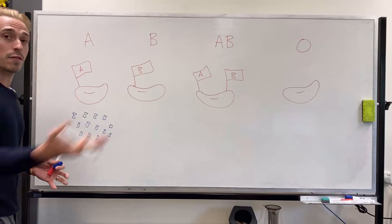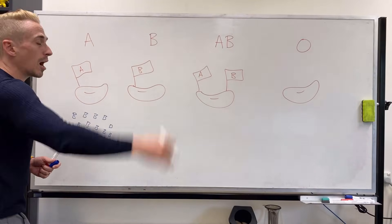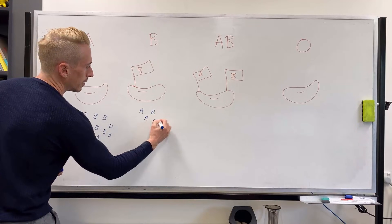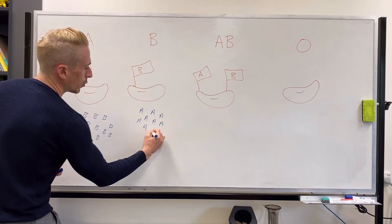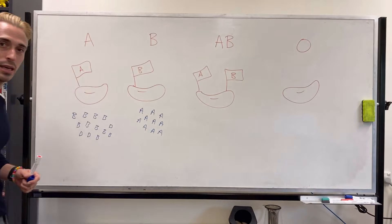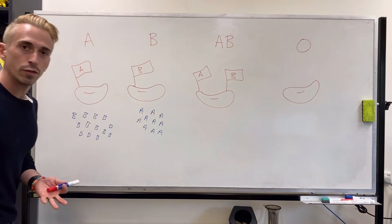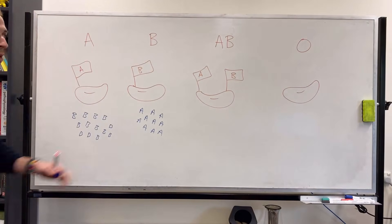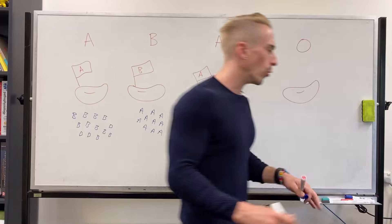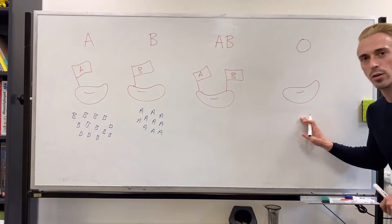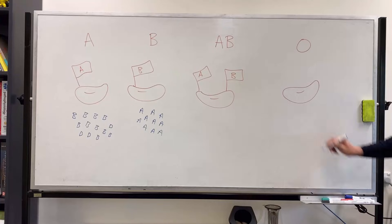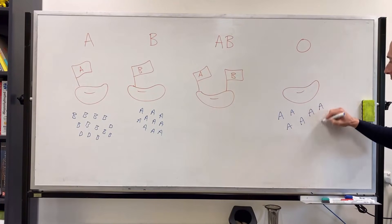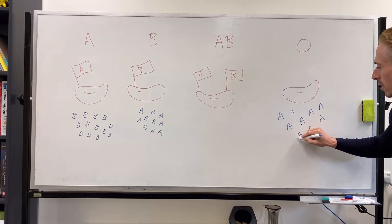And if you're blood group B, the only other flag or antigen that you can create an army or antibodies against is going to be A. And interestingly, if you are of house AB, there's no flag or house to create an army against, so you don't have any antibodies against any of them. But if you're blood group O, you're basically a Bedouin. You have no particular house, but everybody's your enemy. So you're going to create antibodies against house A or antigen A and against antigen B.